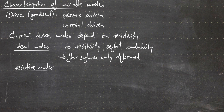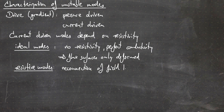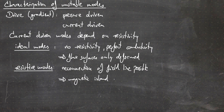Resistive modes mean that the resistivity is finite, which means that reconnection of the magnetic field lines is possible. This allows for magnetic island formation.